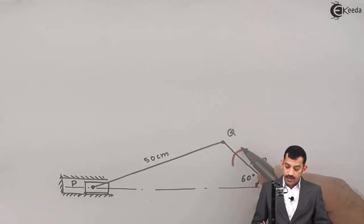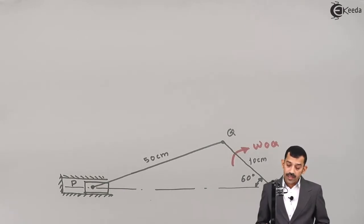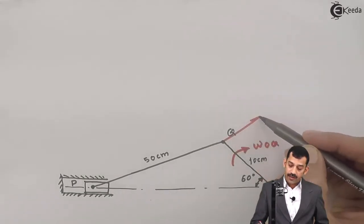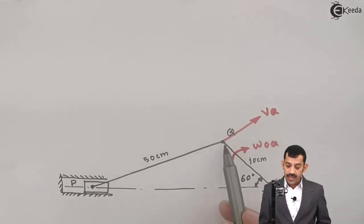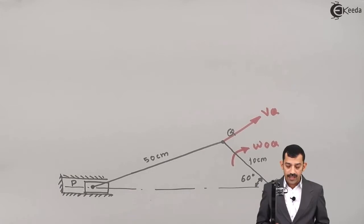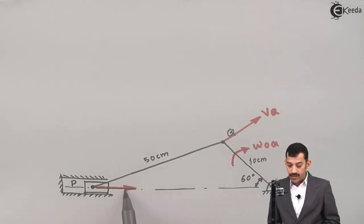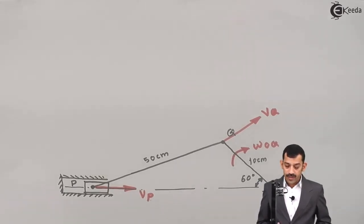The crank OQ rotates clockwise at 310 RPM — direction of rotation is important. As crank OQ rotates in clockwise direction, the linear velocity of point Q is perpendicular to the radius of rotation, therefore perpendicular to OQ, in the same sense as omega. Linear velocity VQ is directed upward. At the other end, slider P is connected, and as Q moves rightward, slider P slides in the horizontal direction, also in the rightward direction. So VP is horizontal.